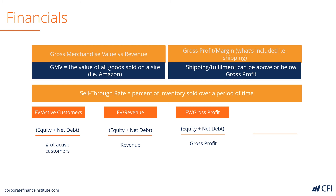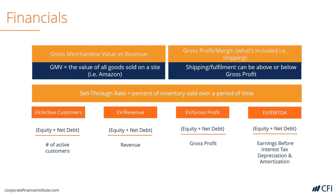Shipping may or may not be included in gross profit, so it's still not a fantastic indicator of economic value, but it's getting warmer. And then finally you've got EV to EBITDA, now getting much closer to cash flow — the enterprise value of the business divided by earnings before interest, taxes, depreciation, and amortization.